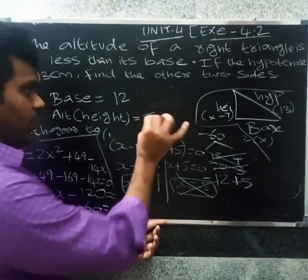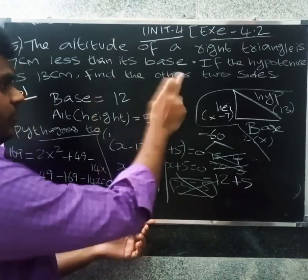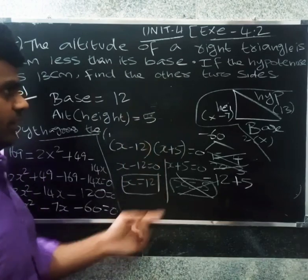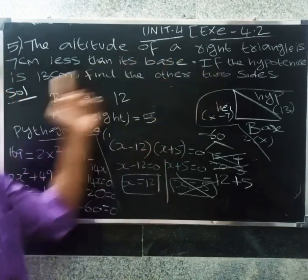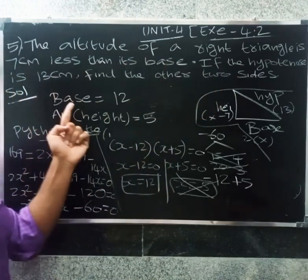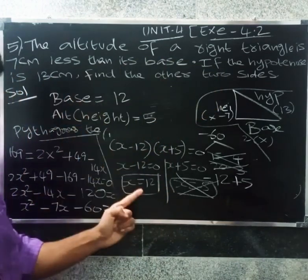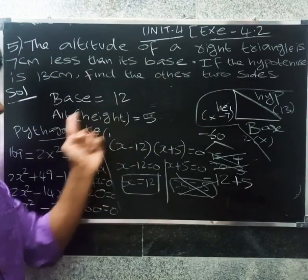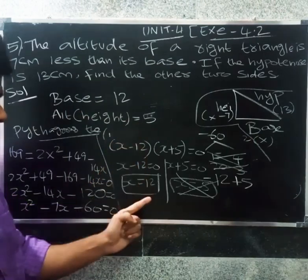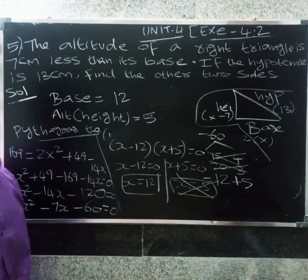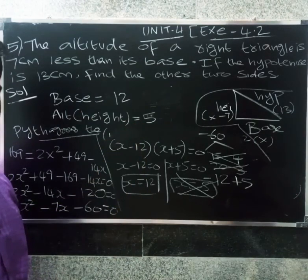So base equals x equals 12 and height equals x minus 7, so 12 minus 7 equals 5. The base is 12 cm and the height is x minus 7 equals 5 cm. Thank you.